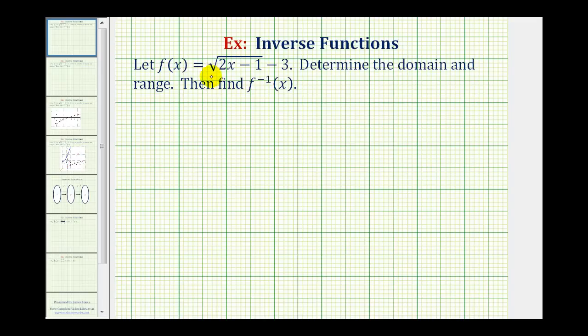We're given f of x equals the square root of the quantity 2x minus 1 minus 3. We want to determine the domain and range of the given function and then find the inverse function.